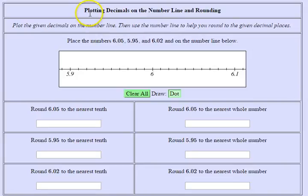In this homework example you're asked to plot decimals on the number line and round. Let's read the directions. Plot the given decimals on the number line, then use the number line to help you round to the given decimal places.